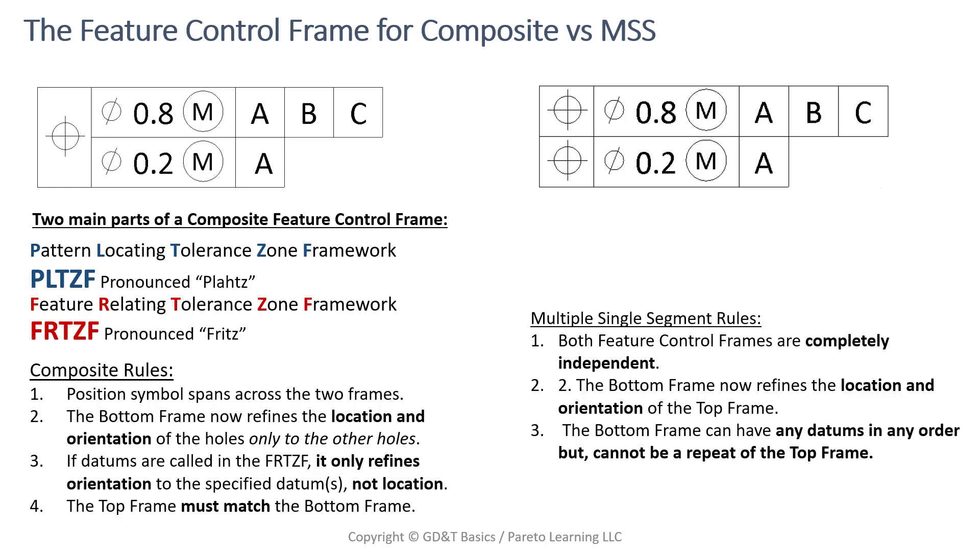On multiple single segment over here on the right, we have to enter it this way. These are two independent, as it states in the first rule here, two independent feature control frames. If you look in the standard, they even have some examples that you can find where they're shown to not even be together. But just out of convenience, we put them together on the drawing. But they don't have to be because they are two completely independent feature control frames.